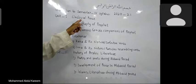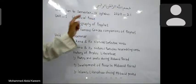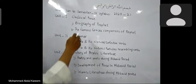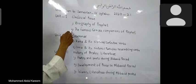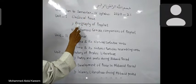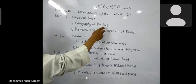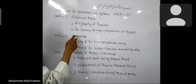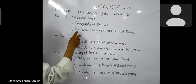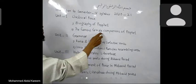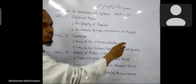Unit 1 belongs to classical prose and it contains 2 lessons. One is the biography of the prophet, and the other is the famous female companions of the prophet.